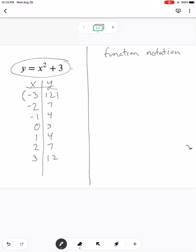So the way we would write this function in function notation, instead of y equals x squared plus 3, we would write f of x equals x squared plus 3. Where you heard me say f of x, this is read f of x.